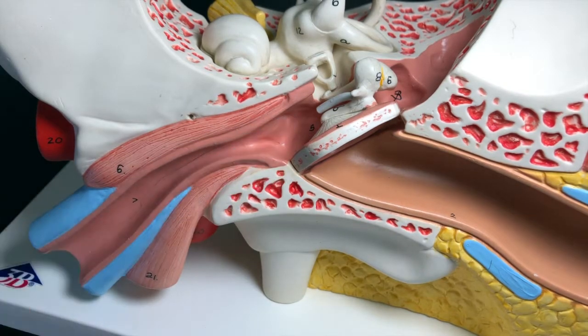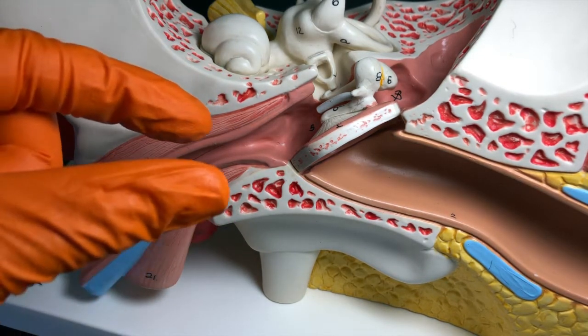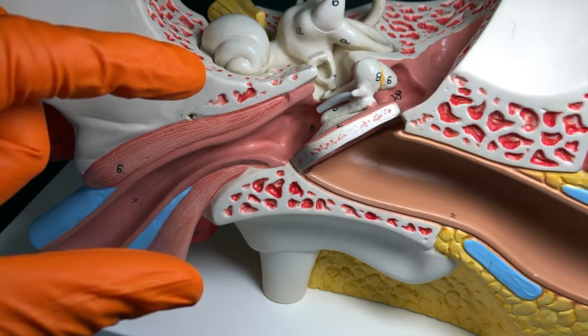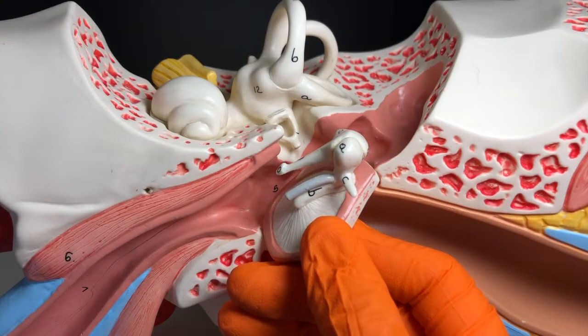...because their pharyngotympanic tubes are shorter and more horizontal, whereas adults' are longer and more vertical.